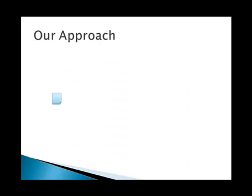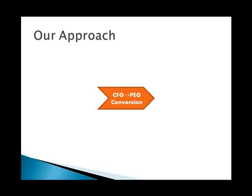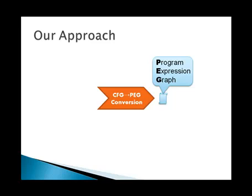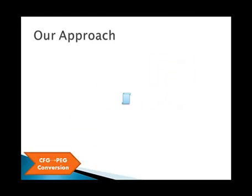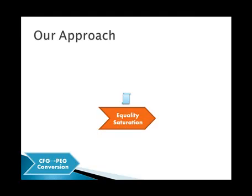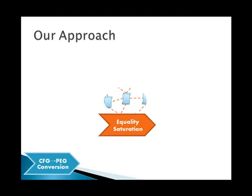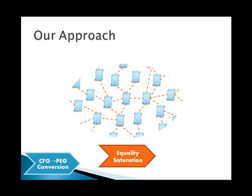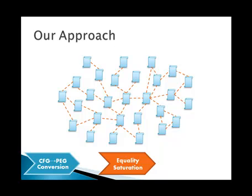Our approach takes a program and first converts it into an intermediate representation we have designed specifically for equality reasoning, called a program expression graph. Now that we have a suitable representation, we can proceed to our equality saturation stage. Equality saturation explores the space of equivalent programs by repeatedly inferring equivalence information. With each equivalence we add to the IR, we simultaneously explore an exponential number of paths through the space of equivalent programs. It is impossible to explore the entire space, so we explore up to some cutoff depth.